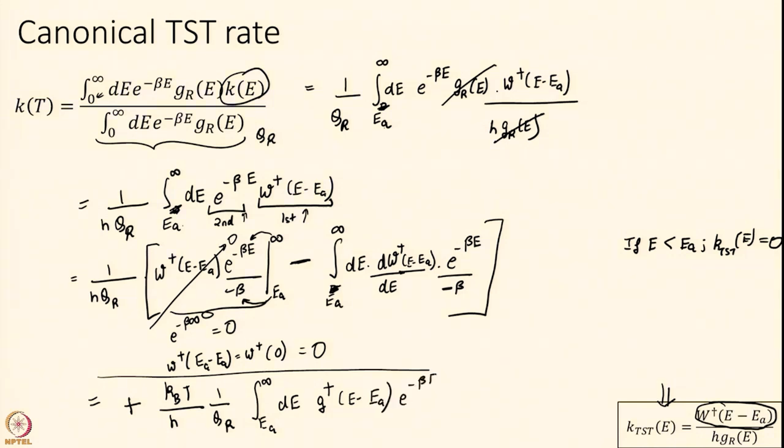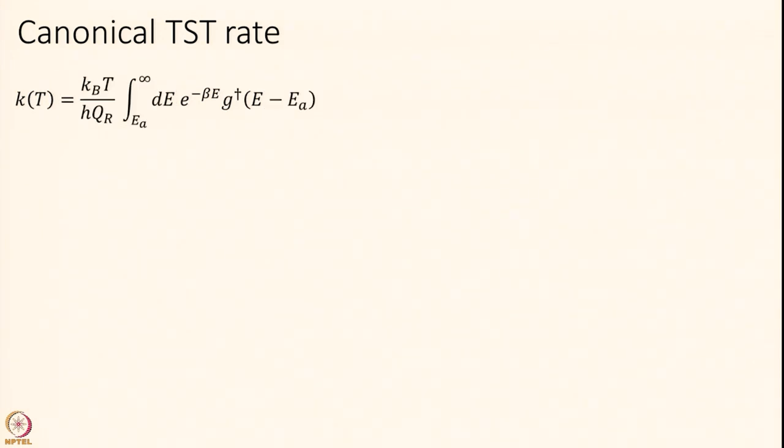You can look that in the last module as well, dW over dE is the density. So what do I do now? I do replacement of variables. I define E prime as E minus E_A over h Q_R. DE prime is DE. Let me find the limits. When E is equal to E_A, E prime equal to 0. When E equal to infinite, E prime also is equal to infinite. So my limits here are 0 to infinite now. DE is the same as DE prime. E to the power of minus beta E is nothing but E prime plus E_A, G of E prime.